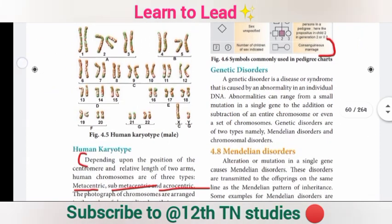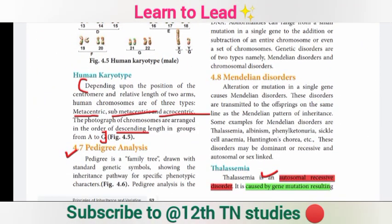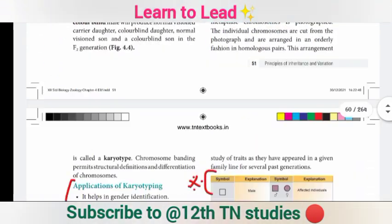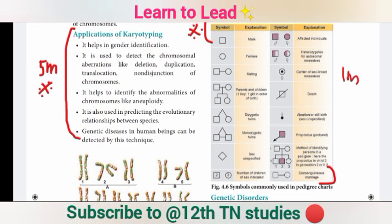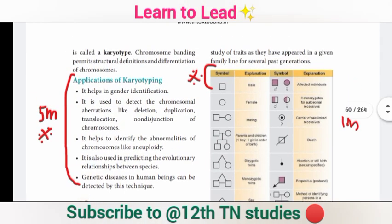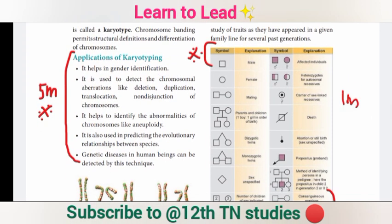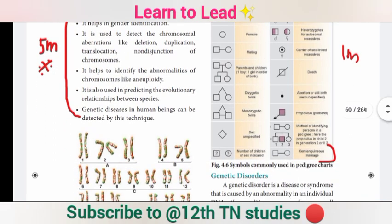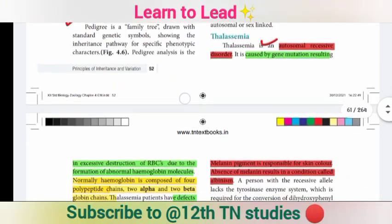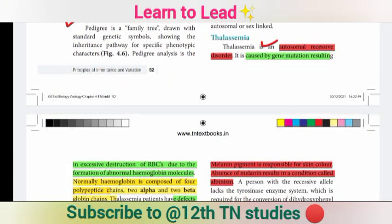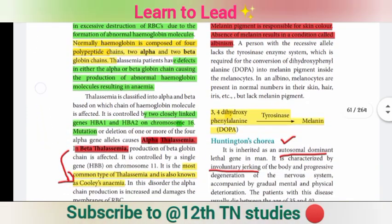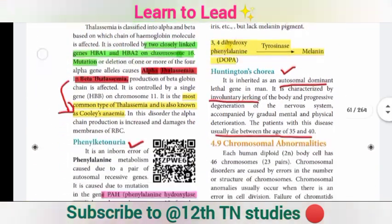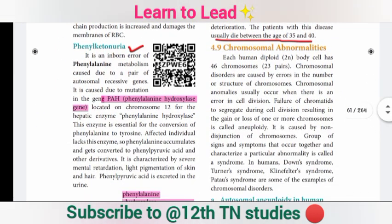Human karyotype — you can read it. There are three types: metacentric, submetacentric, and acrocentric. Next is pedigree analysis, which is in the book back — the table is very important for 1-mark questions. The definition of karyotype is a 5-mark question.